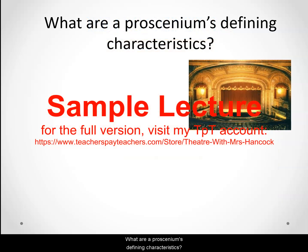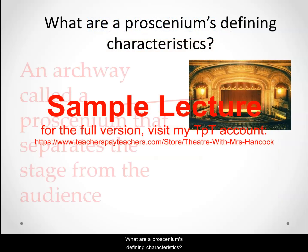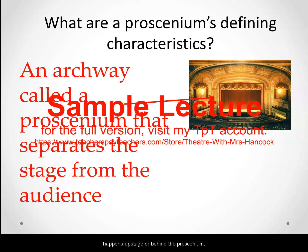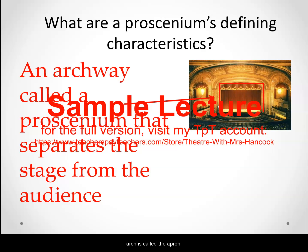What are proscenium's defining characteristics? The defining characteristic of a proscenium stage is the proscenium arch that separates the stage from the audience. The audience sits in the house in front of the proscenium, and most of the action happens upstage or behind the proscenium. The small portion that sticks out in front of the proscenium arch is called the apron.